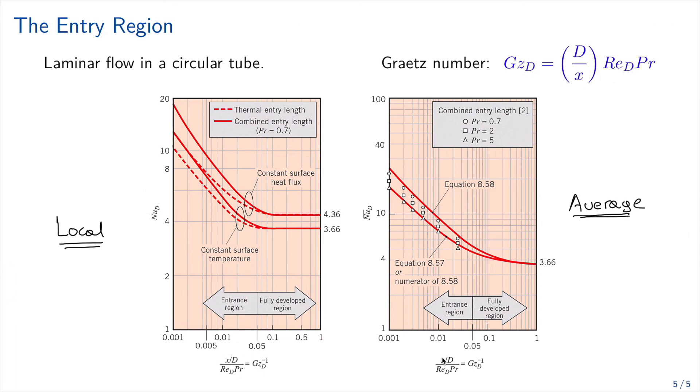For the average situation, only results for the combined entry are presented. And they are given by these two plots that are depending on Prandtl number. So the top one corresponds to Prandtl 0.7, and the bottom one corresponds to Prandtl 0.5. Something in between, it will be in between the two ones.